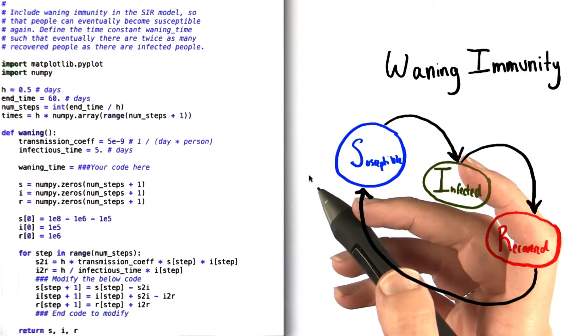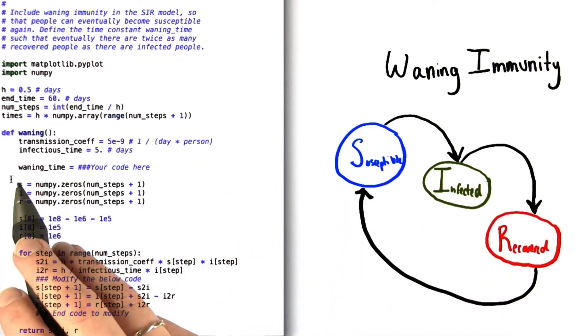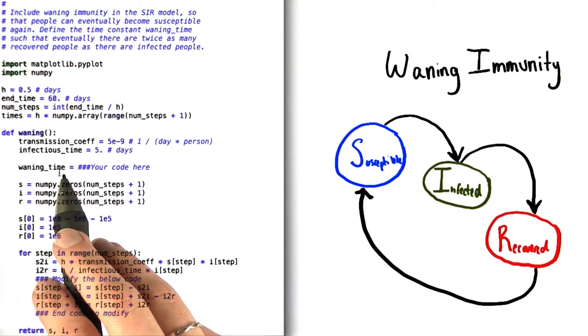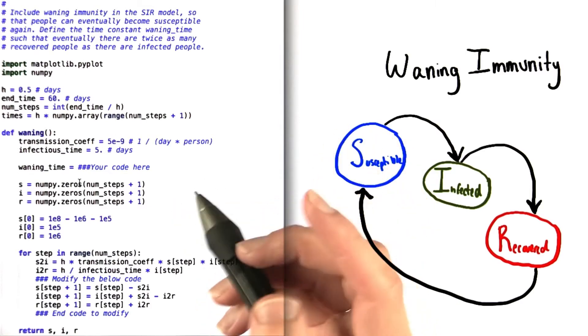We're going to call this waning immunity, and we'll set the constant over here, waning time, to equal the amount of time that it takes for a person's immunity to fade away.